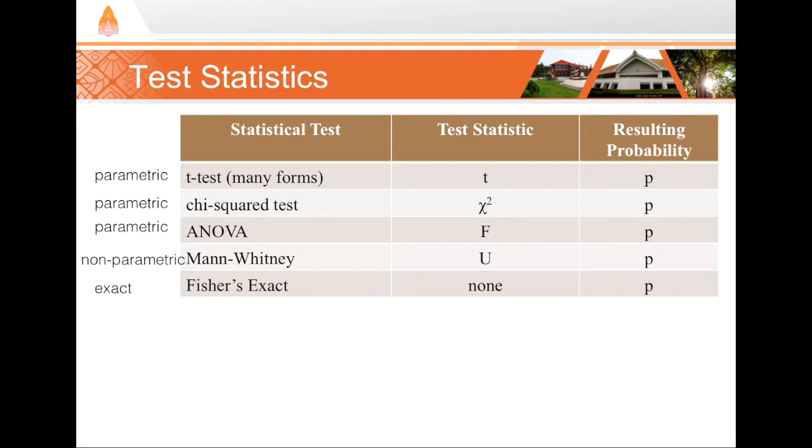And finally, we have exact tests. In basic inferential statistics, Fisher's exact test is really the only test that uses this approach. But there are other more complex exact tests out there. When we say exact, what we mean is we don't compute any test statistic. Notice there's no test statistic listed in the column there for Fisher's exact. And we don't estimate p-value from our test statistic. Instead, we actually compute the exact probability of our data that occurs under our assumed conditions, just like in the example that I showed you of a lady drinking tea.